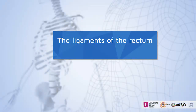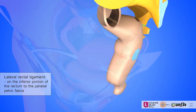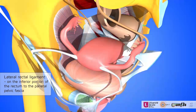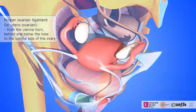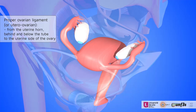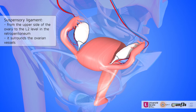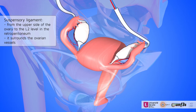The rectum is suspended by the rectal lateral ligaments. The utero-ovarian ligaments link the uterus and the ovaries, and the ovaries are suspended to the lateral side walls by the suspensory ligaments.